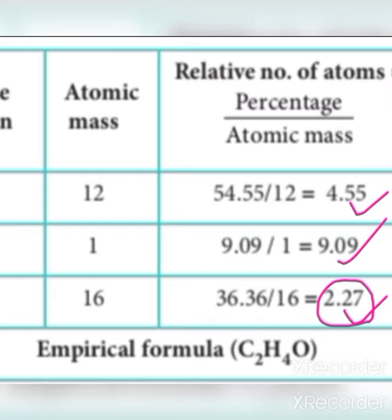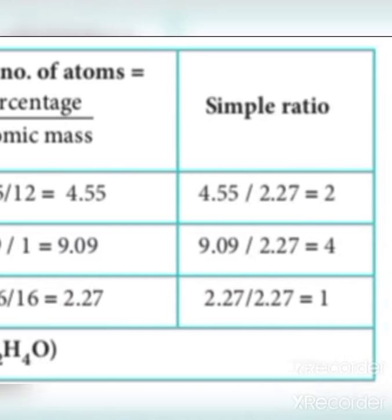Dividing all mole values by the lowest factor 2.27: carbon gives 4.55 divided by 2.27 equals 2; hydrogen gives 9.09 divided by 2.27 equals 4; oxygen gives 2.27 divided by 2.27 equals 1.